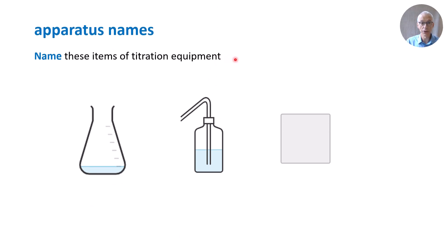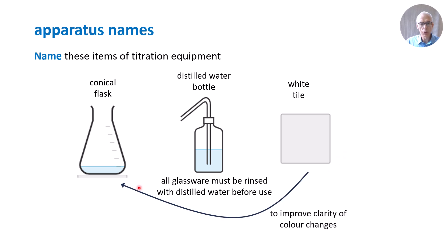Here are three further items of titration equipment. Can you name them? Conical flask, this is a distilled water bottle or wash bottle. Please note, all glassware must be rinsed with distilled water before use. This is a white tile. The purpose of a white tile is to place it underneath the conical flask to improve the clarity of color changes.